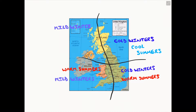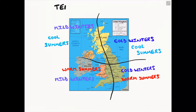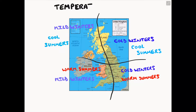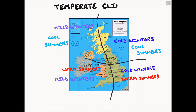We can therefore argue that the British Isles has a temperate climate — temperate meaning a climate or a place which is never extremely hot or extremely cold.